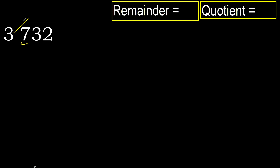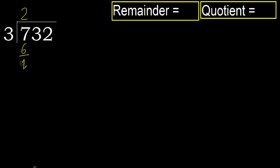3 multiplied by 3 is 9 — 9 is greater. Multiply by 2: 6 is not greater. Subtract: 7 minus 6 is 1.